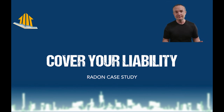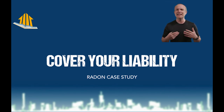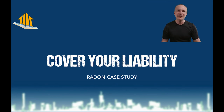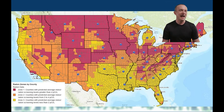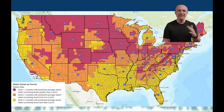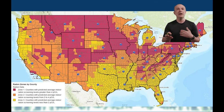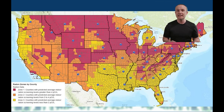The first thing you want to do is cover your liability, because there are definitely things you can do to a home that will hurt the people inside. We need to make sure we're not putting ourselves as building professionals into a situation where we're doing things that are going to actually hurt a child. This map is from the U.S. EPA — it's a radon map. If you've seen this before, you should know you cannot trust this map at all anymore. It was last updated almost 30 years ago in 1993. Homes have been getting more airtight over the last 30 years and are very different now.